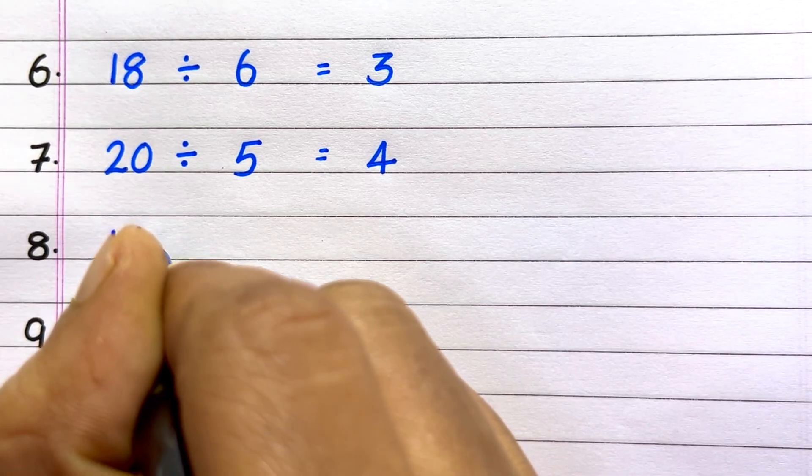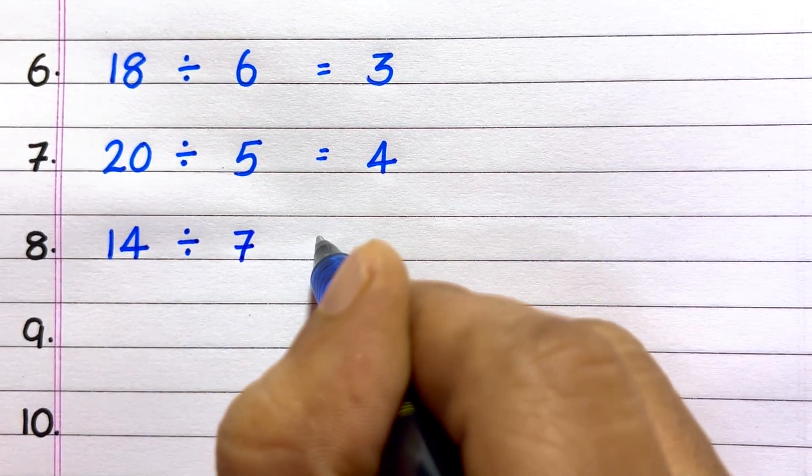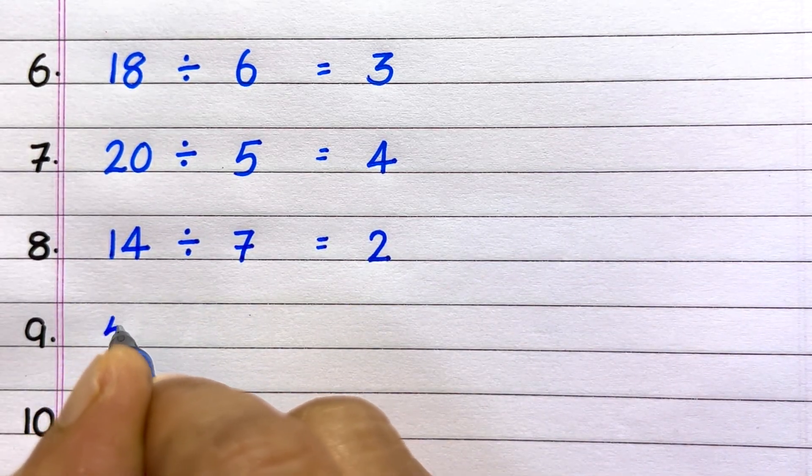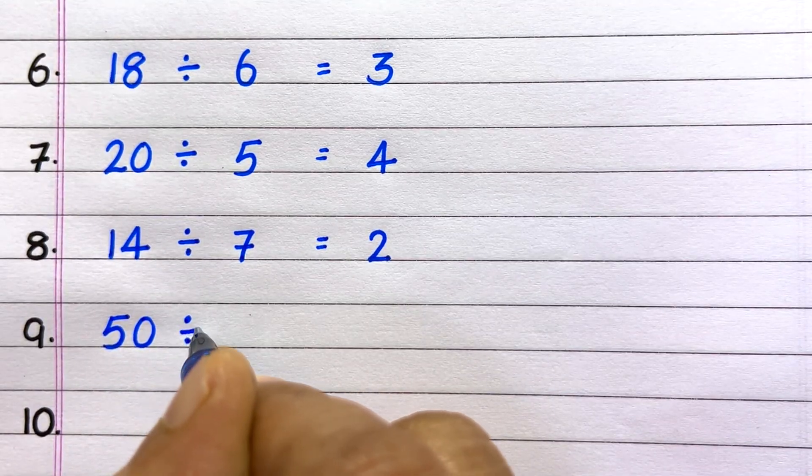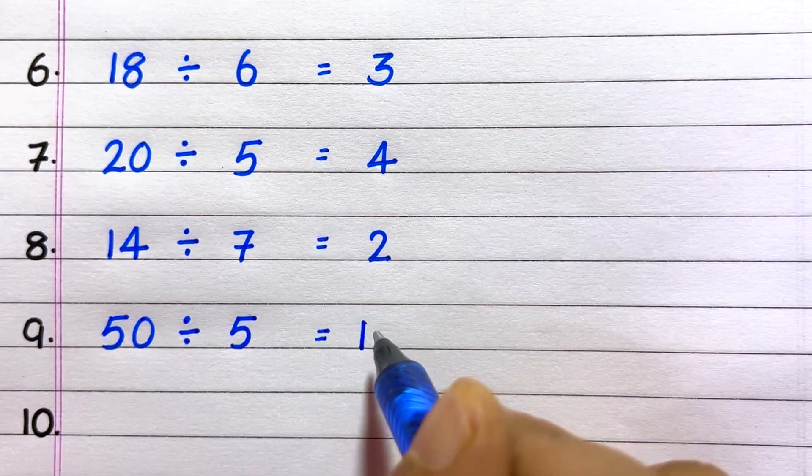Eighth example of division is 14 divided by 7 equals 2. Ninth, 50 divided by 5 equals 10.